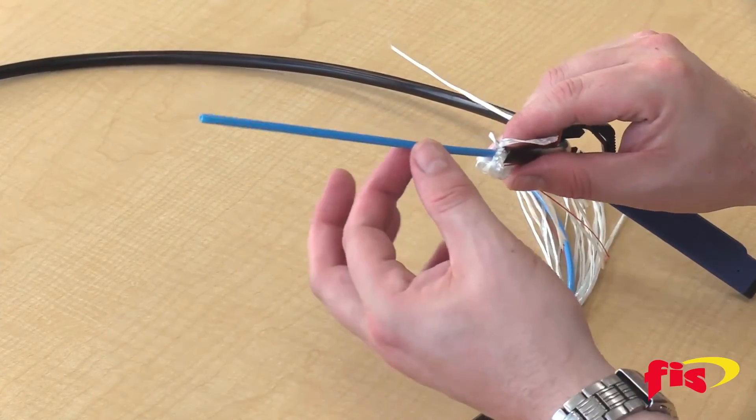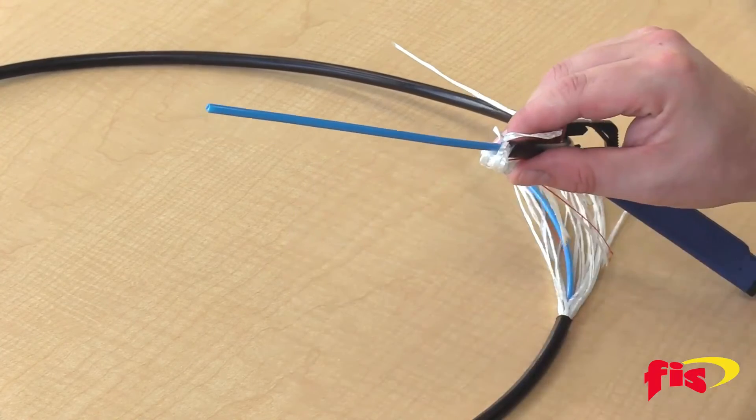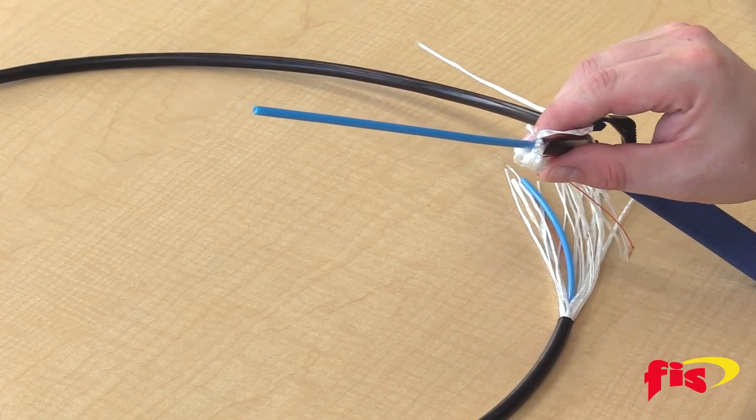The next step would be to strip off the buffer tube and then clean off the icky pick gel from this outdoor cable.